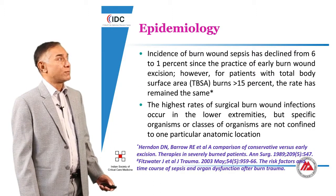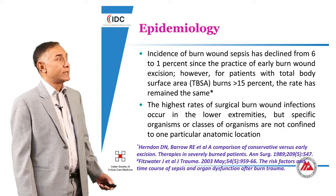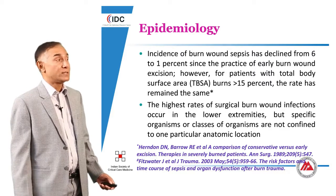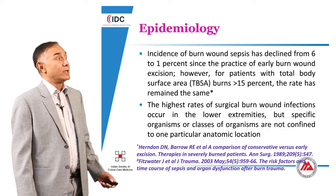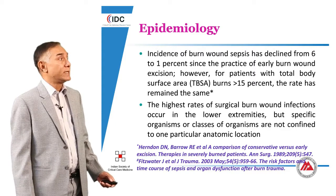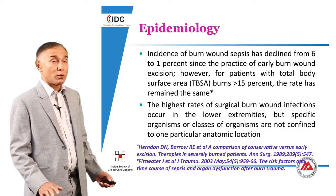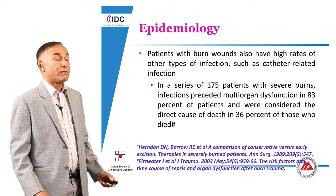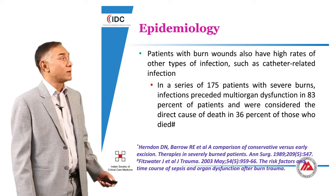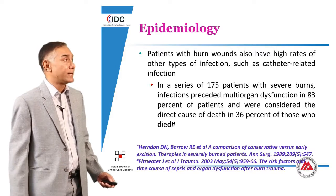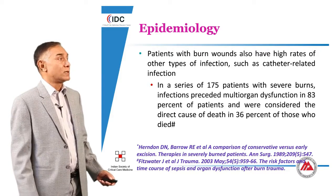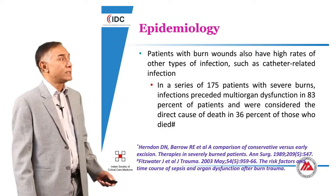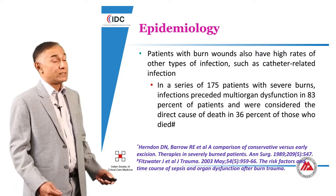Burn wound sepsis has declined from earlier, from about 6 to 1 percent, but there is still significant morbidity once your total burn surface area exceeds 15 percent. You also have increased morbidity if your burns occur in the lower extremities, although the bugs tend to remain the same. Patients with burn wound infections also have other types of hospital-acquired infections, typically catheter-related infections. In this series of 175 patients, there was multi-organ dysfunction in 83 percent as a direct cause of death.